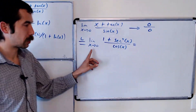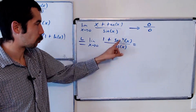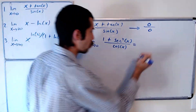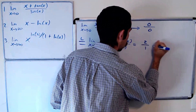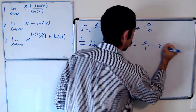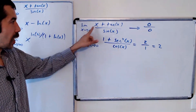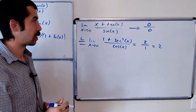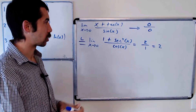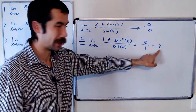Now we can just plug in x equals zero, and we get one plus one, which is two over one. So the limit as x goes to zero of x plus tangent of x over sine of x is equal to two.